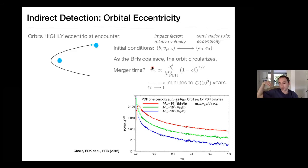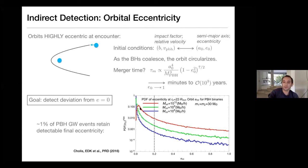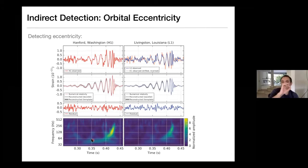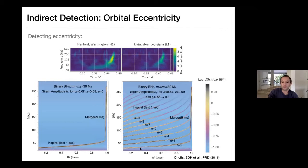If we look at the PDF of the eccentricity not at formation but as the signal enters the LIGO band, the goal is to detect a deviation from eccentricity of zero. Something like 1% of events should have detectable eccentricity — defined as greater than 0.2 — as the event enters the LIGO band. To detect eccentricity, instead of seeing a normal chirp with a single frequency at each moment in time, you would see a harmonic series of chirps. This is from my paper where we derived this in 2016.